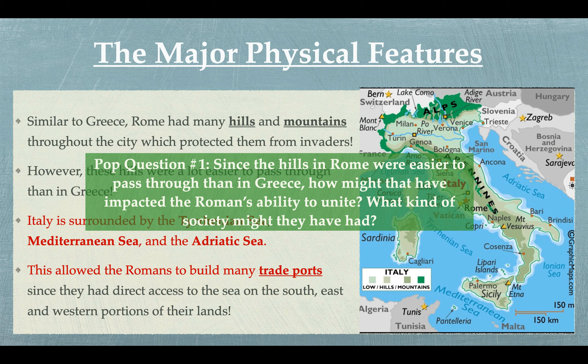Before we move on, I want you to consider what you know about ancient Greece and the impact that hills and mountains had on it. Since the hills in Rome were easier to pass through than in Greece, how might that have impacted the Romans' ability to unite? What kind of society might they have had? Do you think the ancient Romans had many city-states, or do you think they might have had an empire, and why? Make sure you answer both parts of the question and post your answer to the pop question in Google Classroom.